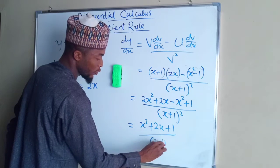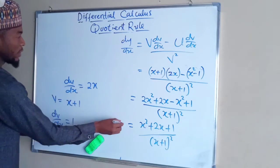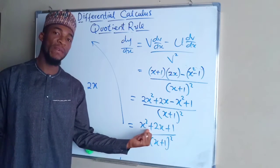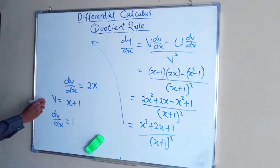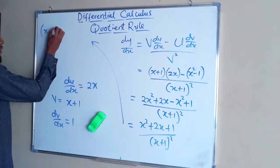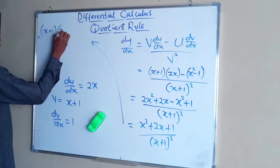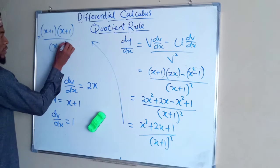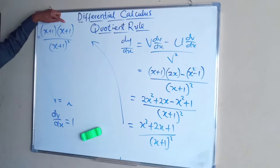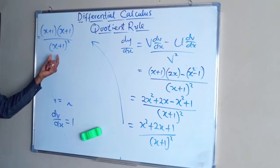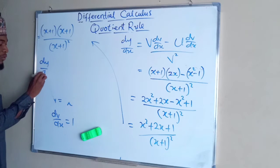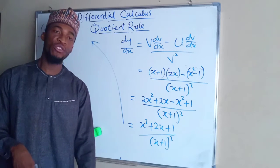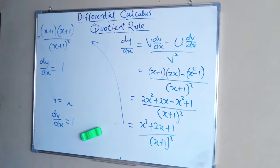Recognizing that x squared plus 2x plus 1 is a perfect square quadratic, it factorizes as (x+1)(x+1), divided by (x+1) squared. This gives (x+1) squared divided by (x+1) squared, therefore dy/dx equals 1. This is the result using the quotient rule.